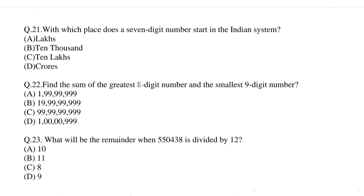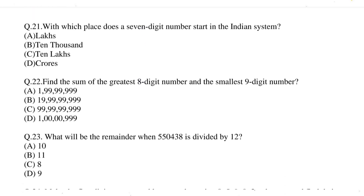Question 21: with which place does a 7-digit number start in the Indian system? The correct option is option C, 10 lakhs. Question 22: find the sum of the greatest 8-digit number and the smallest 9-digit number. The correct option is option B, 1,999,999,999. Question 23: what will be the remainder when 550438 is divided by 12? The correct option is option A, 10.